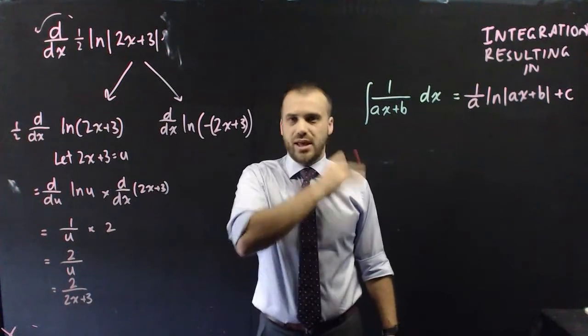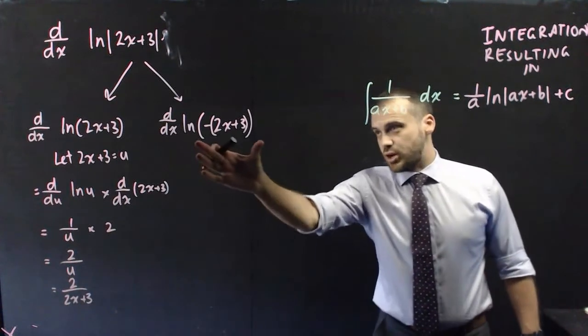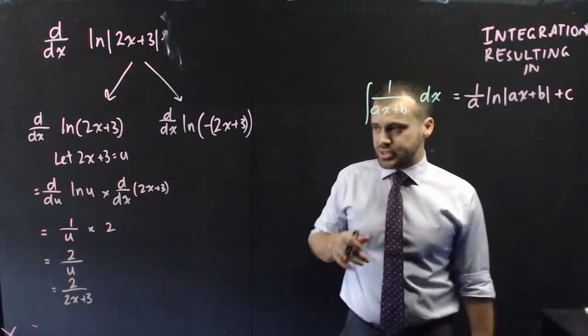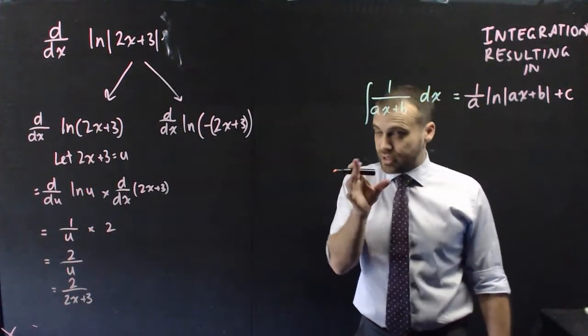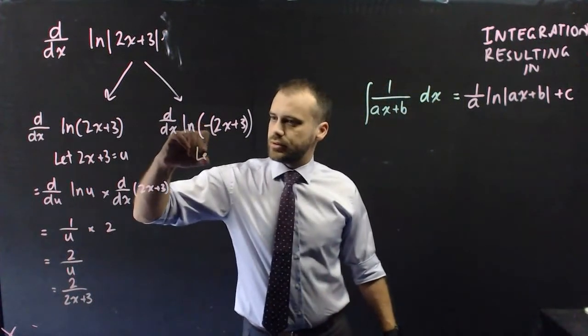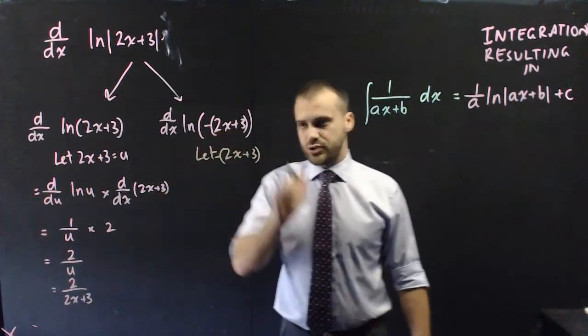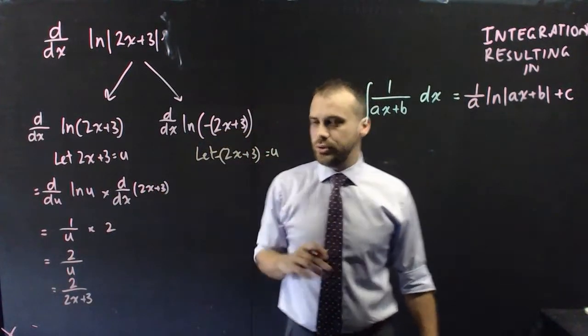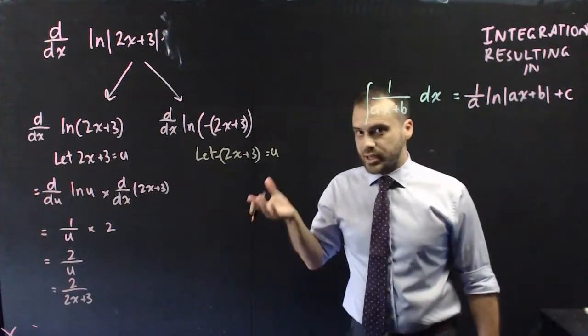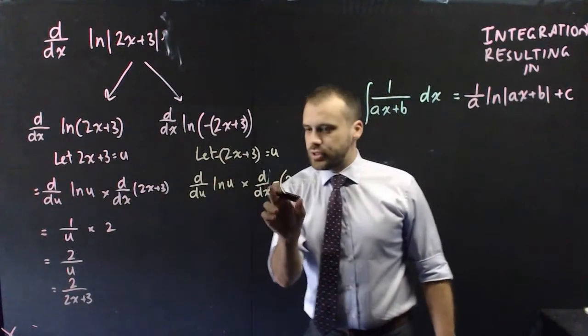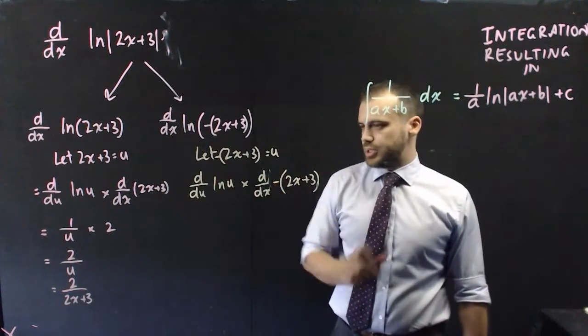We just need to divide by that a value. Now, the procedure's identical here, but it does lead to something interesting. Let's let 2x plus 3, negative 2x plus 3, equal u. And then let's write this line out again.